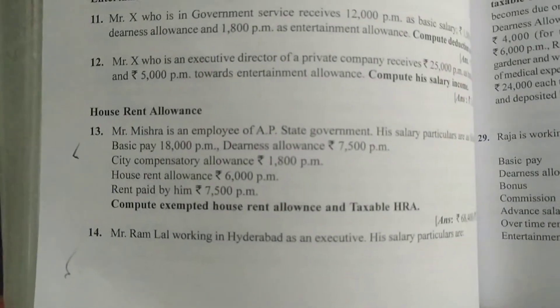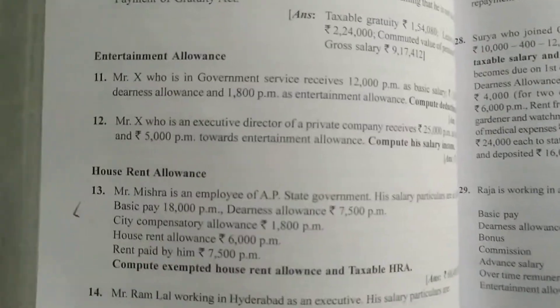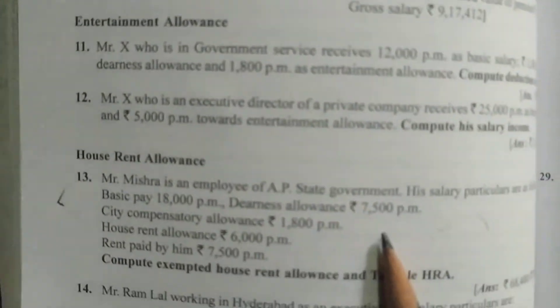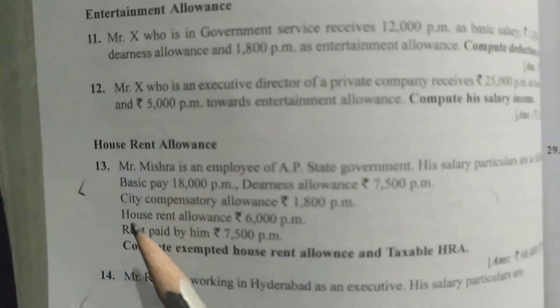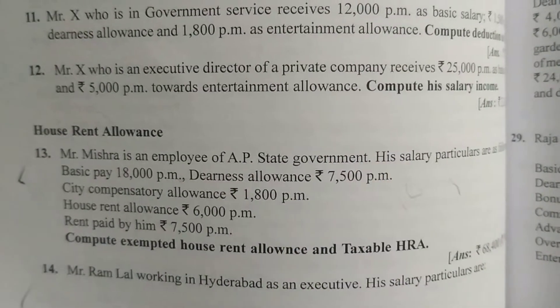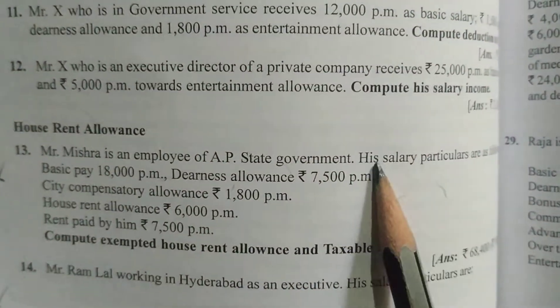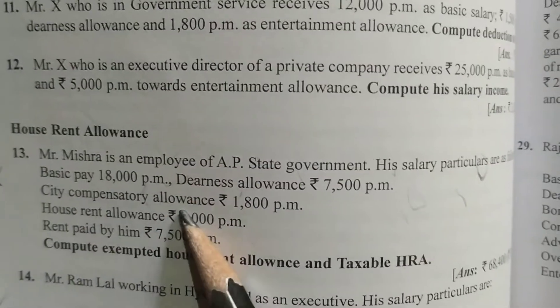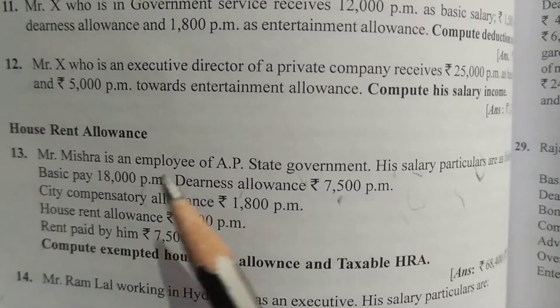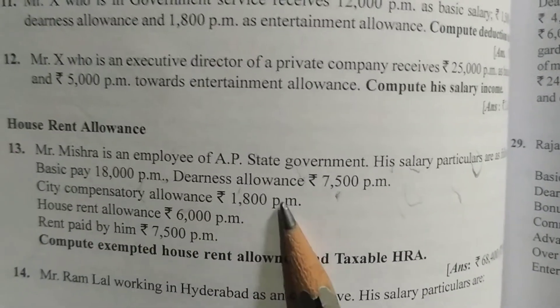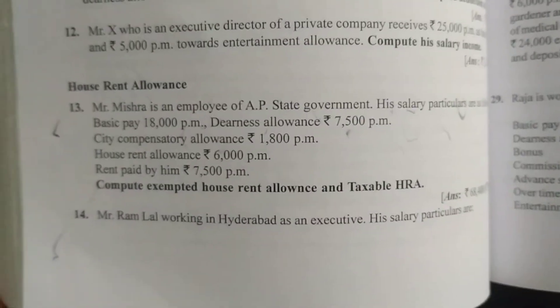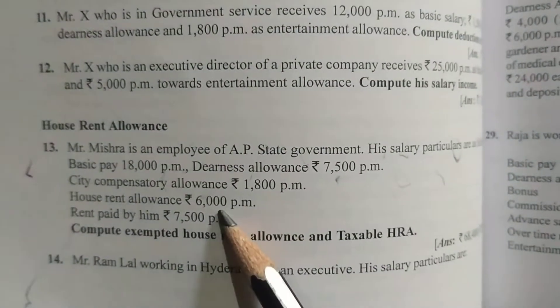Good morning students. We are doing problems on income from salaries, specifically the house rent allowance chapter. We have done some problems and we'll do two or three more problems on this. This could be asked for five marks. Mr. Mishra is an employee of AP state government. His salary particulars are: basic pay 18,000 per month, dearness allowance 7,500 per month, city compensatory allowance 1,800 per month, house rent allowance 6,000 per month, and rent paid by him is 7,500 per month. Compute exempted HRA and taxable HRA.